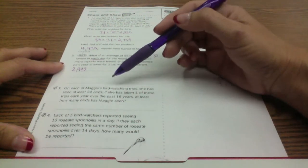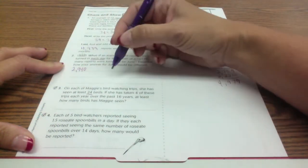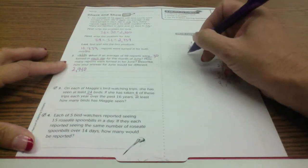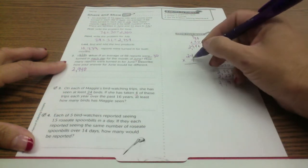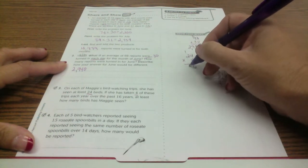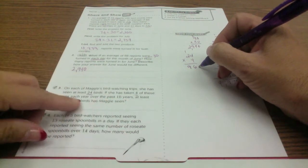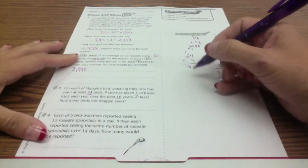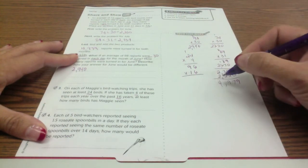She has seen at least 24 birds on each of her trips and she takes four trips each year. So the first thing I'm going to do is find out how much she sees each year. 4 times 4 is 16, 4 times 2 is 8 plus 1 more is 96. So each year she sees 96 birds. If she does this for 16 years, how many birds has she seen at least? Now I'm going to multiply 96 times 16.